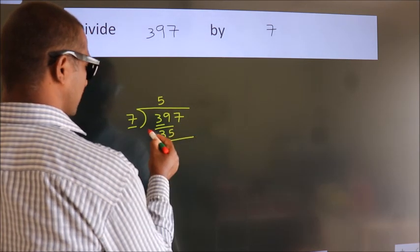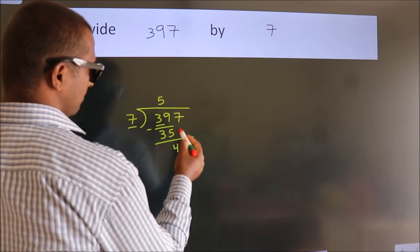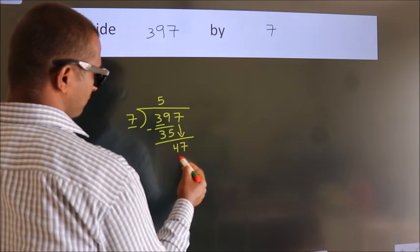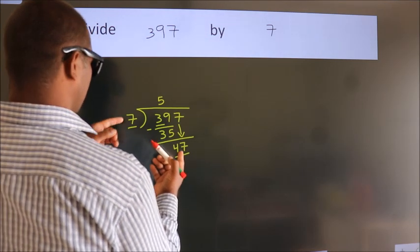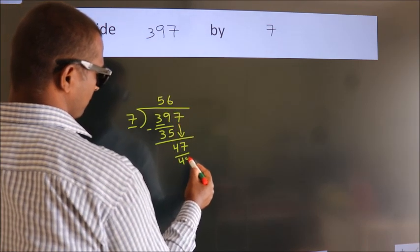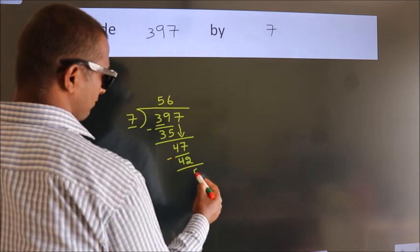Now we subtract and get 4. After this, bring down the beside number, so 7 comes down. So we have 47. A number close to 47 in the 7 times table is 7 times 6 equals 42. Now we subtract and get 5.